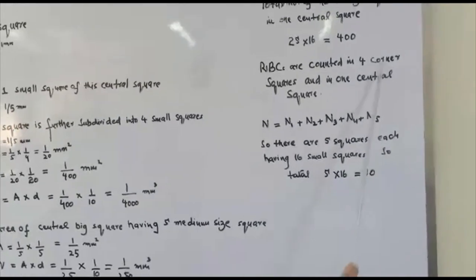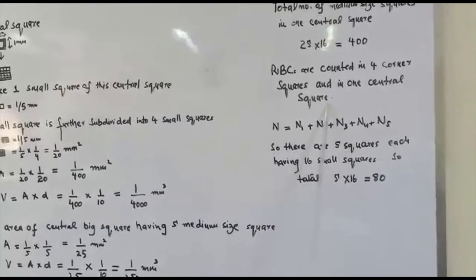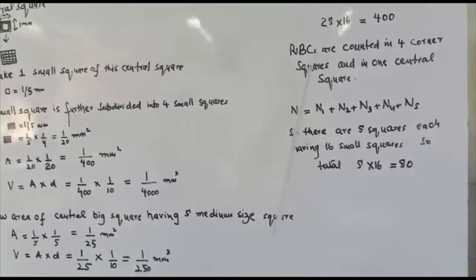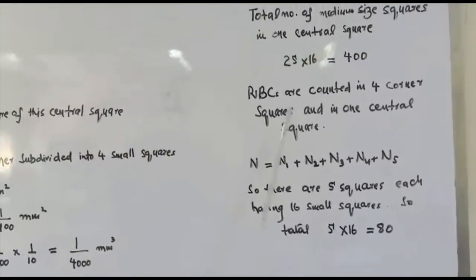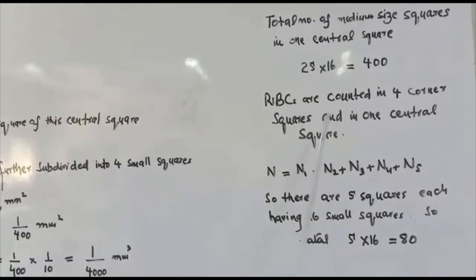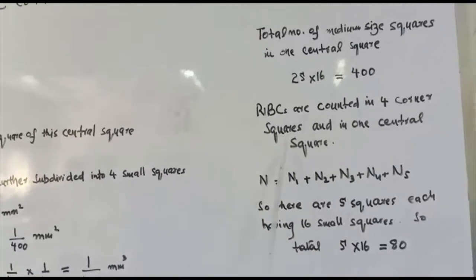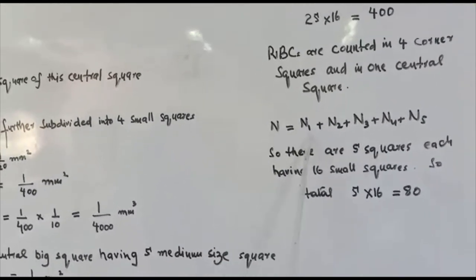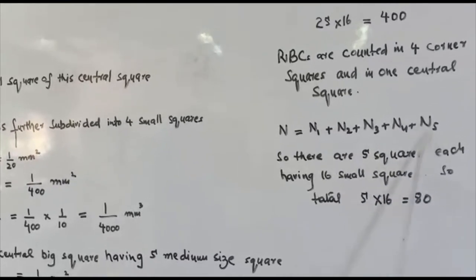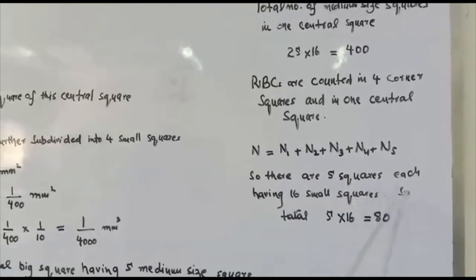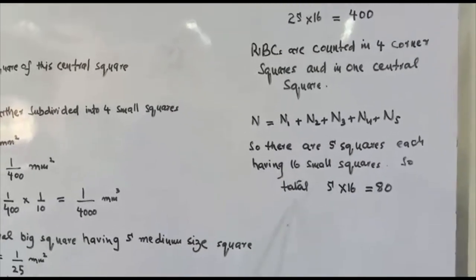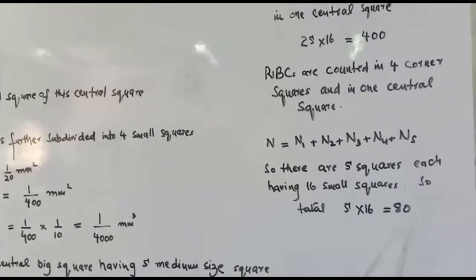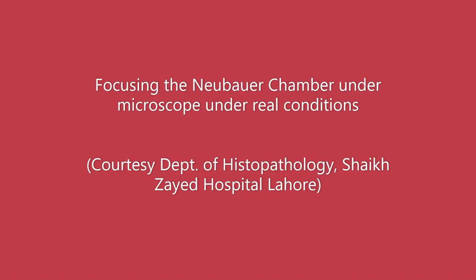RBCs are counted in the four corner squares and in one central square. The total N = N1 + N2 + N3 + N4 + N5. There are five squares each having sixteen small squares, so the total number of squares in which we count is 16 × 5 = 80.